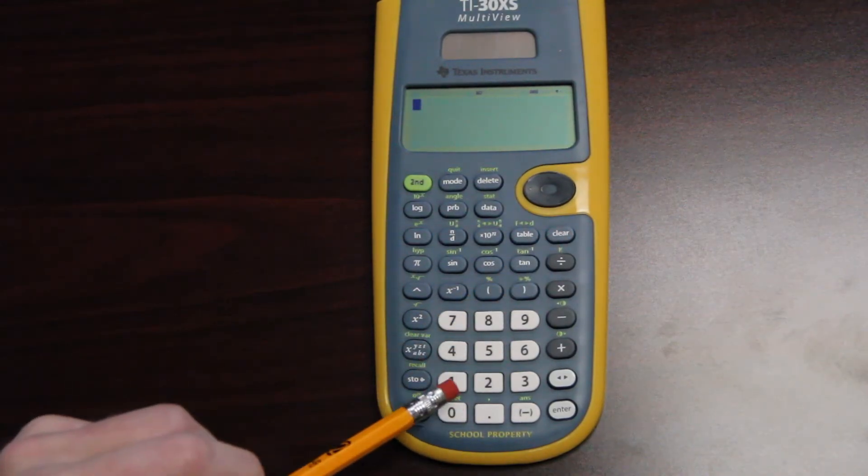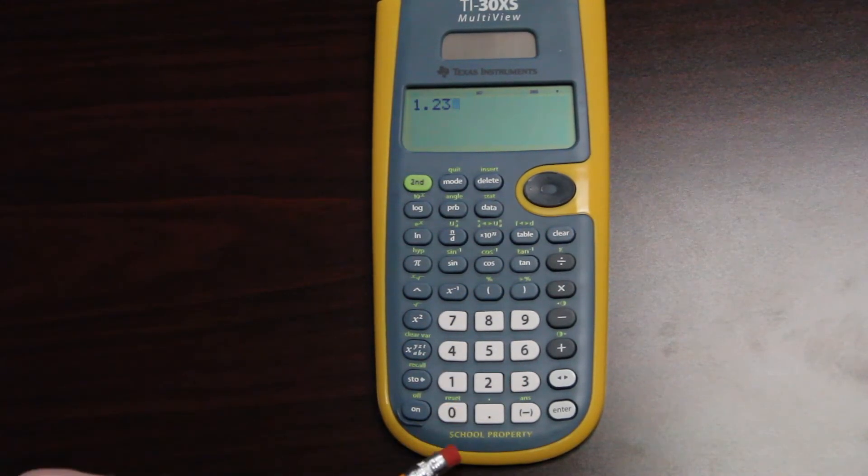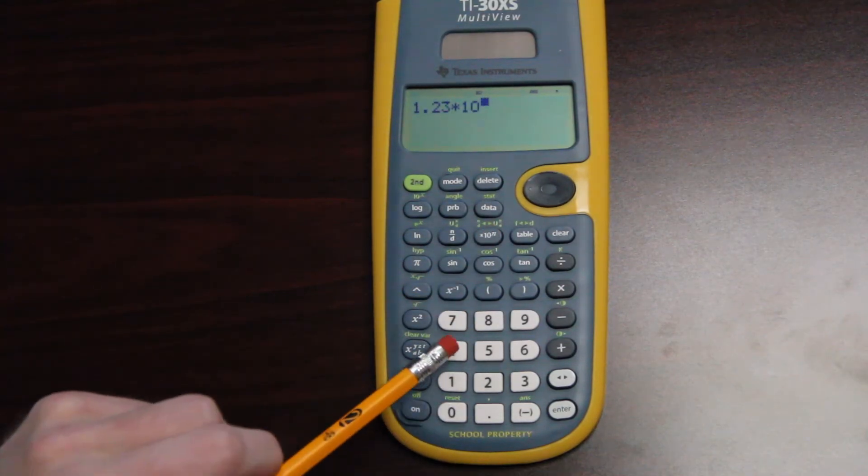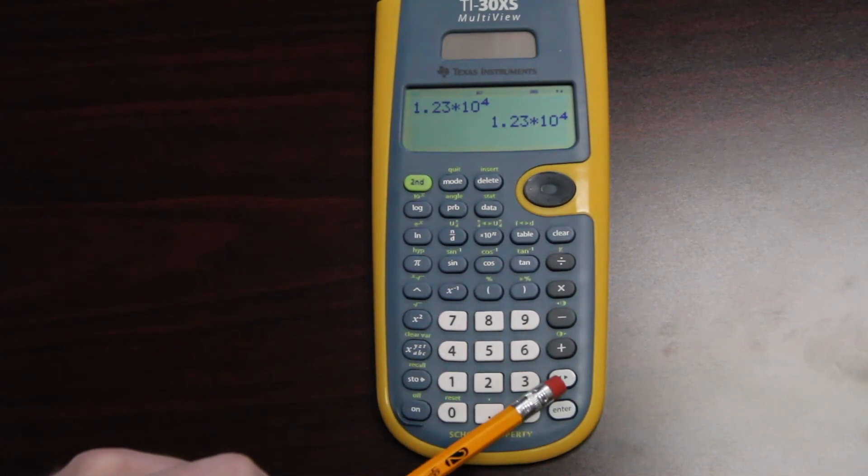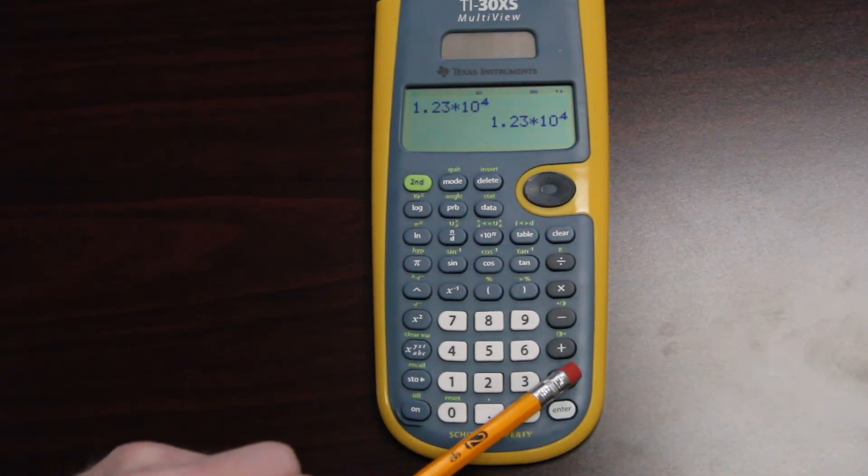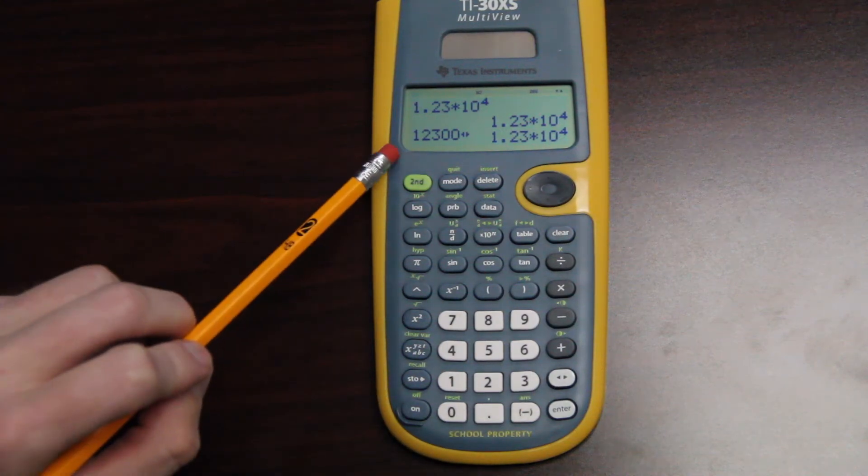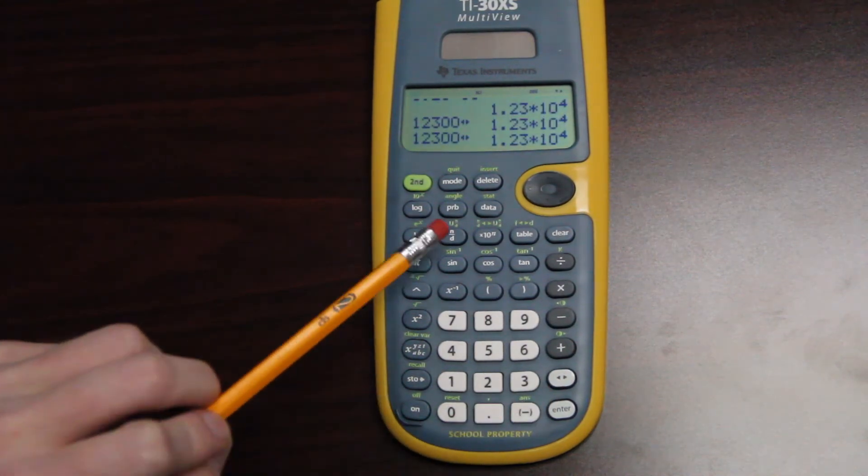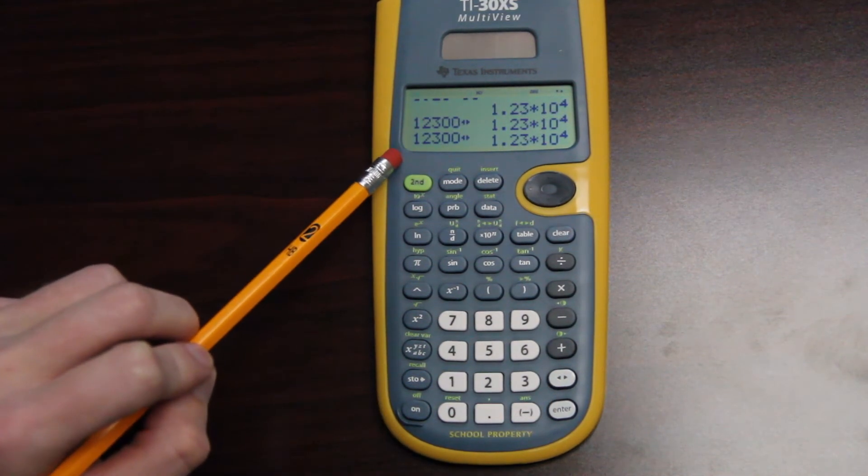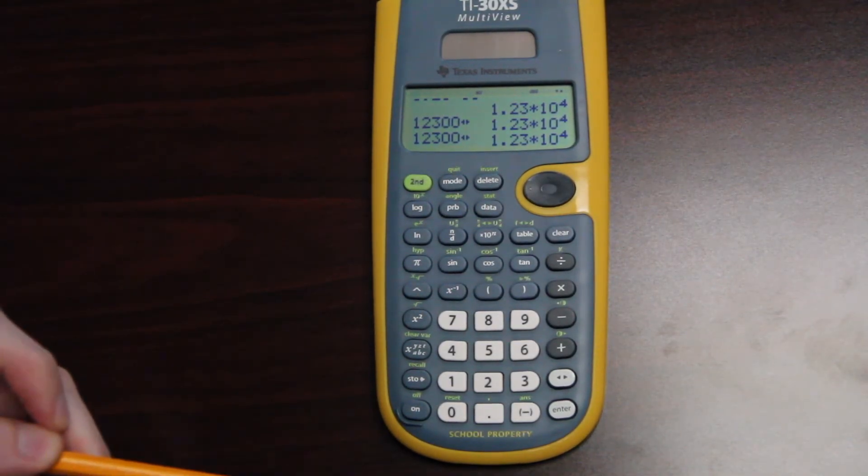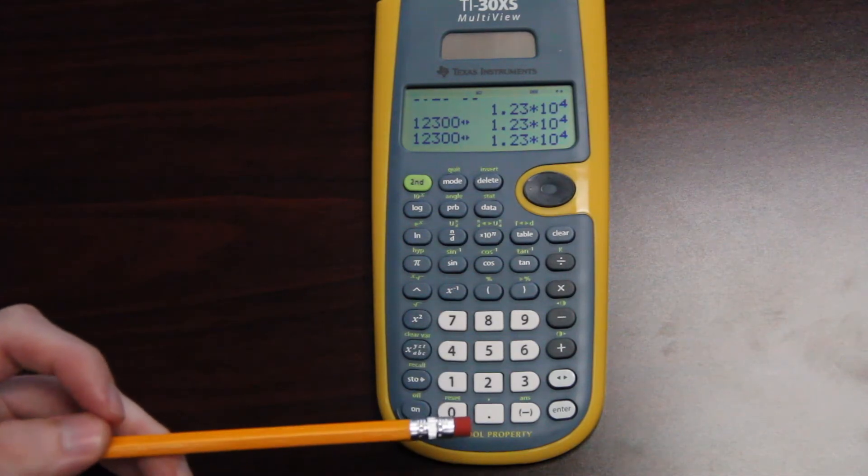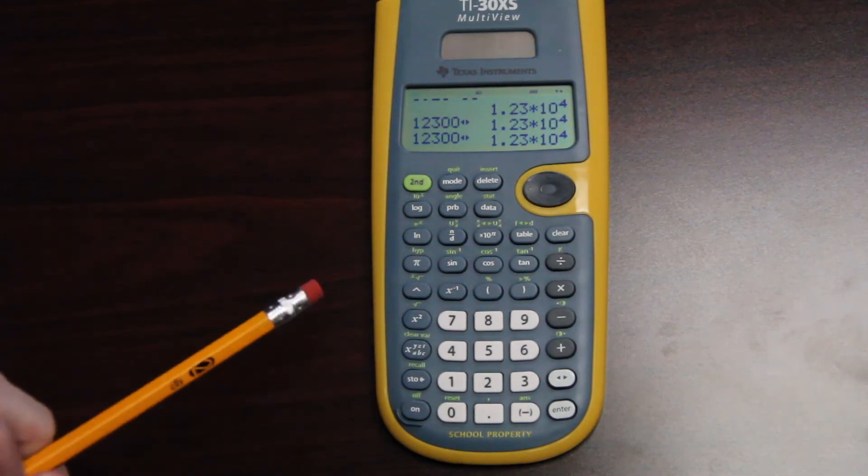So let's say I have a number like 1.23 times 10 to the fourth. If I hit enter, it'll show me that value. But if I hit this arrow change key, it'll show me the actual value of that expanded over here. 1, 2, 3, 0, 0. It's the same thing as 1.23 times 10 to the fourth. So if you ever wanted to see what an expanded notation looks like, this is what it is.